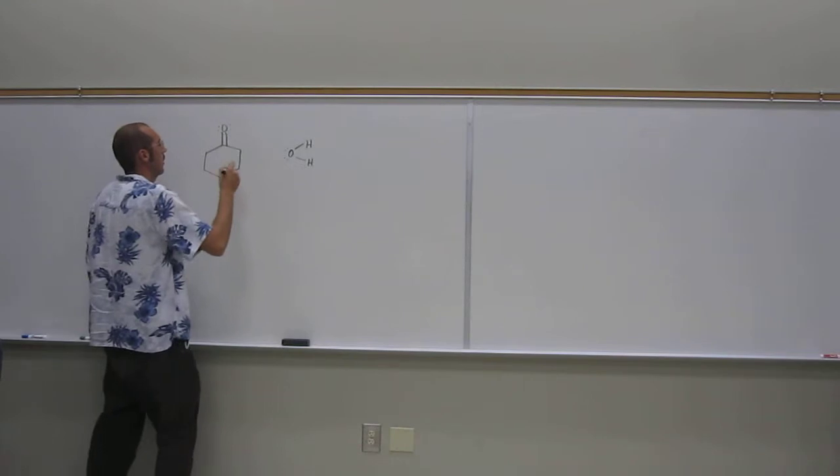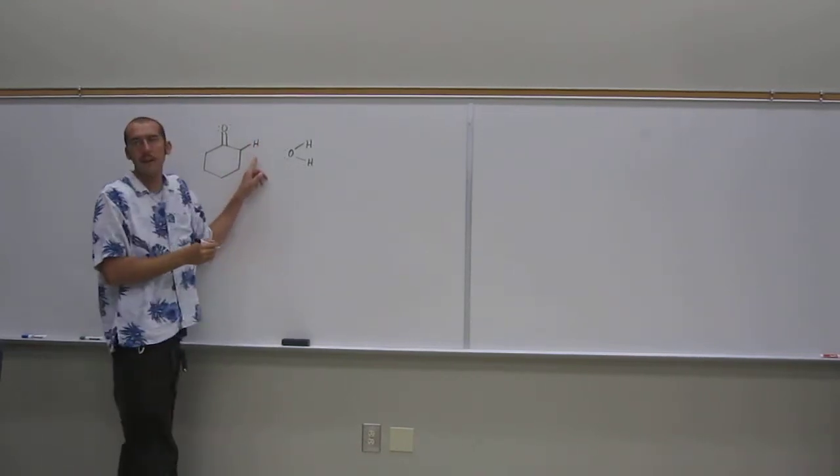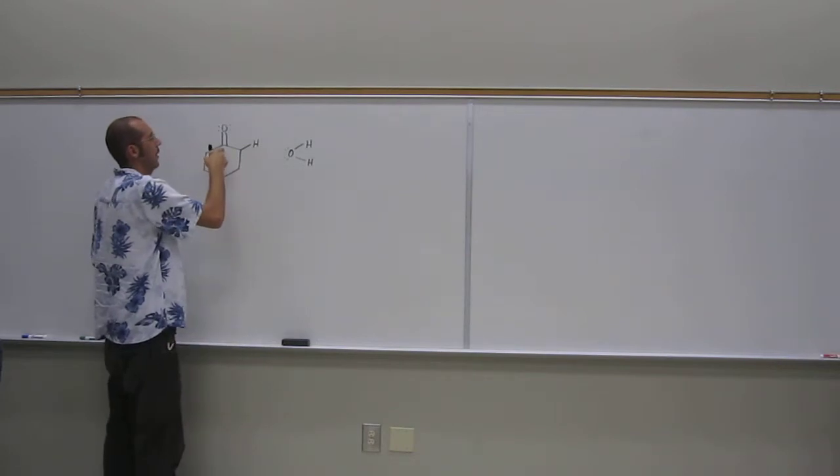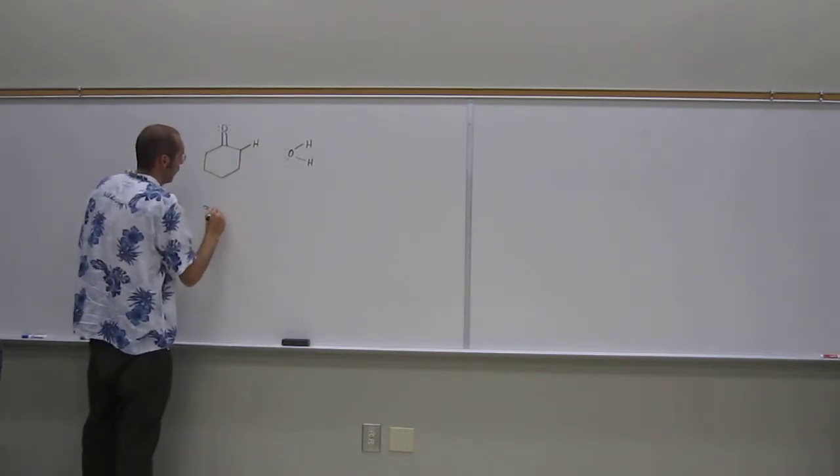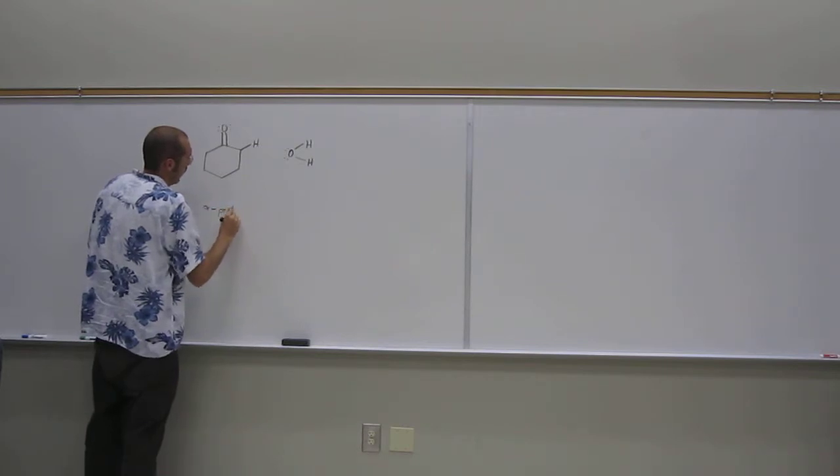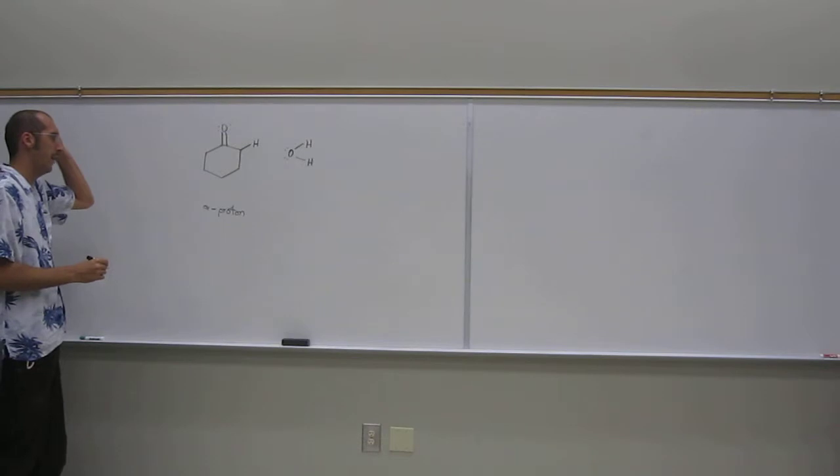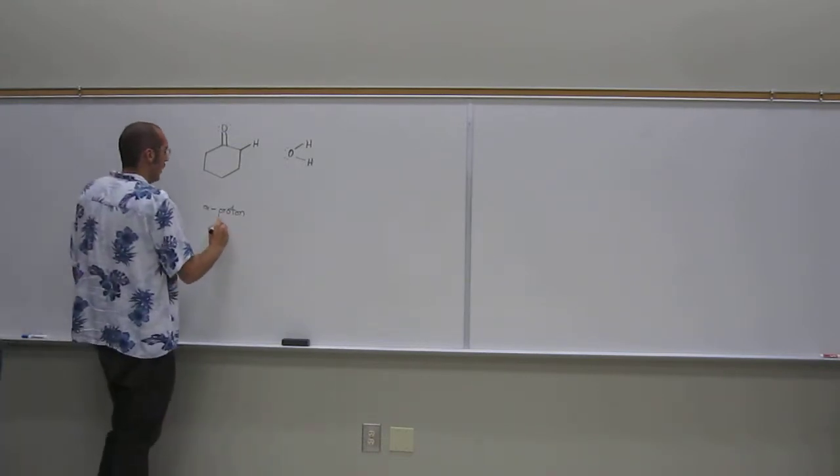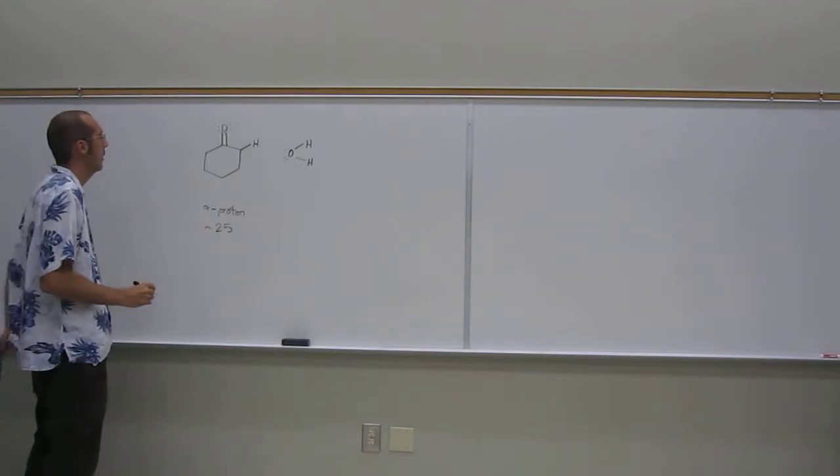What you can look at is if you look at your pKa table, you'll see that this alpha proton, so we call this, since that's the ketone, that's alpha to the ketone, right? So this is an alpha proton. I don't have the pKa table, but I think it's about 25. So that's the pKa of that.